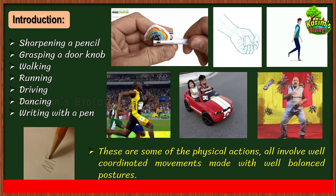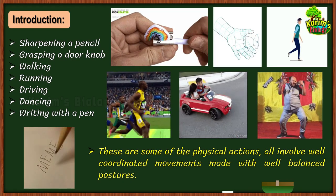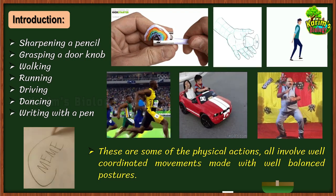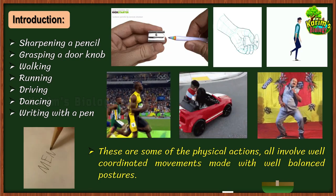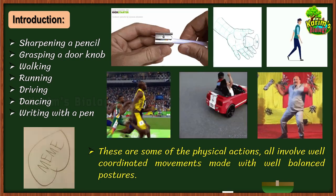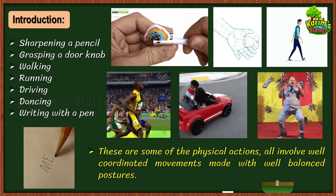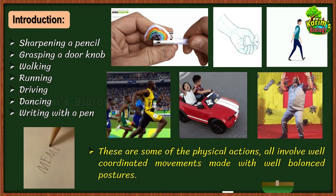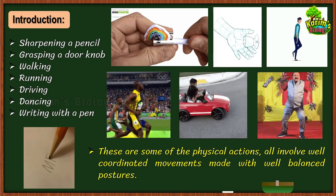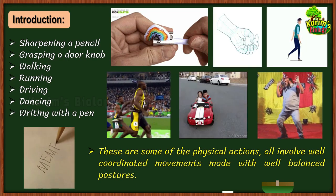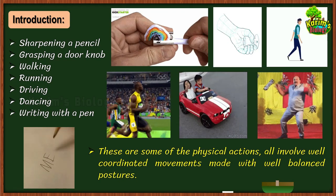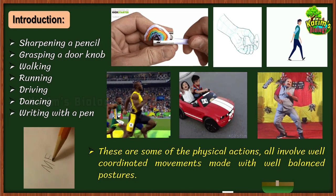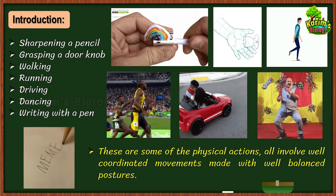What does it mean by well-coordinated movement? Take the example of sharpening a pencil — you have to hold the sharpener with your left hand, hold the pencil with your right hand, insert the pencil into the sharpener, then twist it to sharpen it. All these activities have to be in an ordered fashion. Without putting the pencil in the sharpener first, twisting it doesn't complete the work. Do you think this coordination is brought about by a single system or multiple systems in your body?